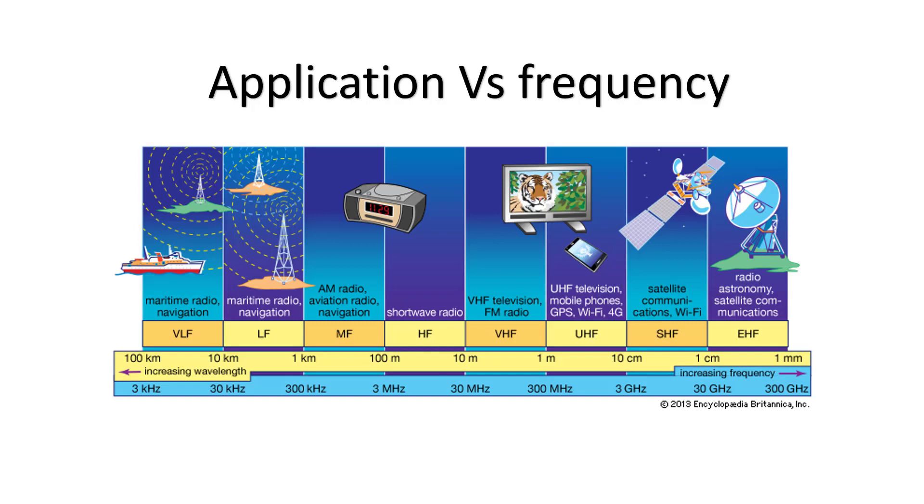This picture shows the different applications of radio frequency. As you see here, we are starting with the intermediate or lower frequency. We have very low frequency and low frequency, which is used for maritime radio. When we increase the frequency, we reach middle frequency, which is used for radio.